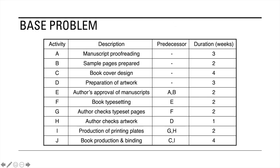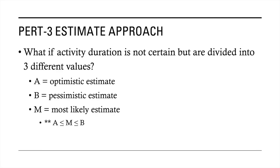So in this case, I don't think it is nice to assume that these durations will be constant. And that is where the PERT-3 estimate approach will come in. The PERT-3 estimate approach assumes that for each activity there will be three duration estimates: A, B, and M. A is the optimistic estimate, B is the pessimistic estimate, and M is the most likely estimate.